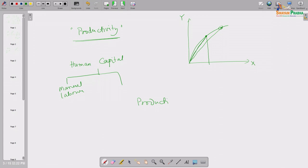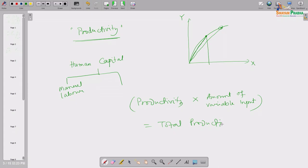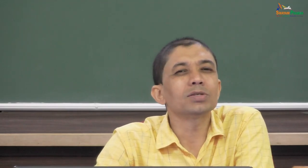A country's total output, its GDP, equals productivity multiplied by the amount of variable input available. Since GDP is a good measure of prosperity, a country's prosperity depends on its productivity level. If India's productivity is higher than Kenya's, India has a better chance of attaining a higher standard of living, and the US has far higher productivity than India.